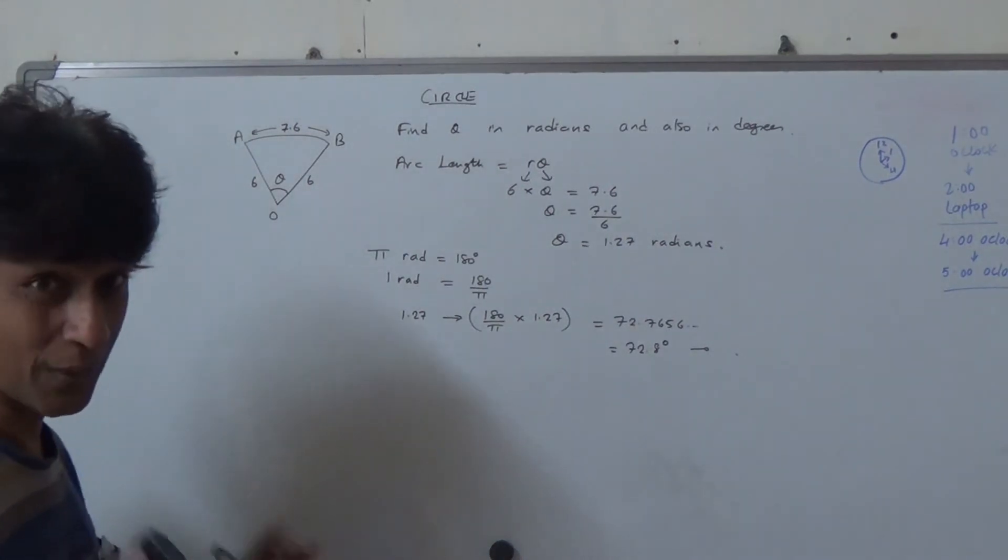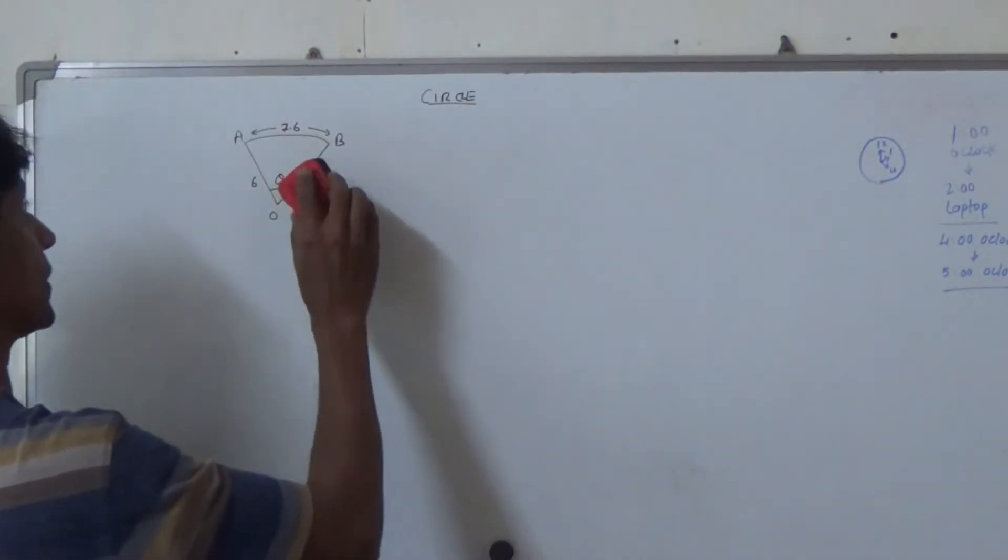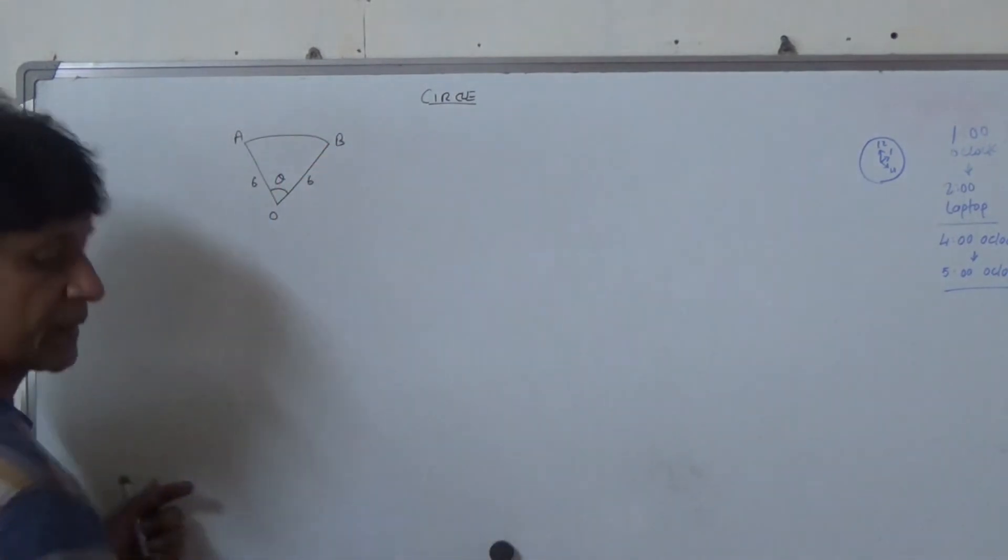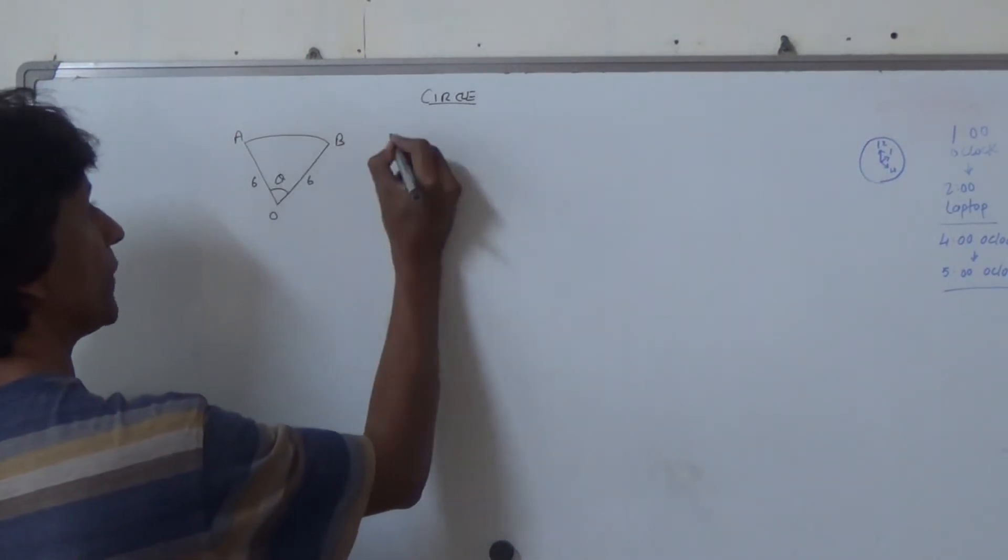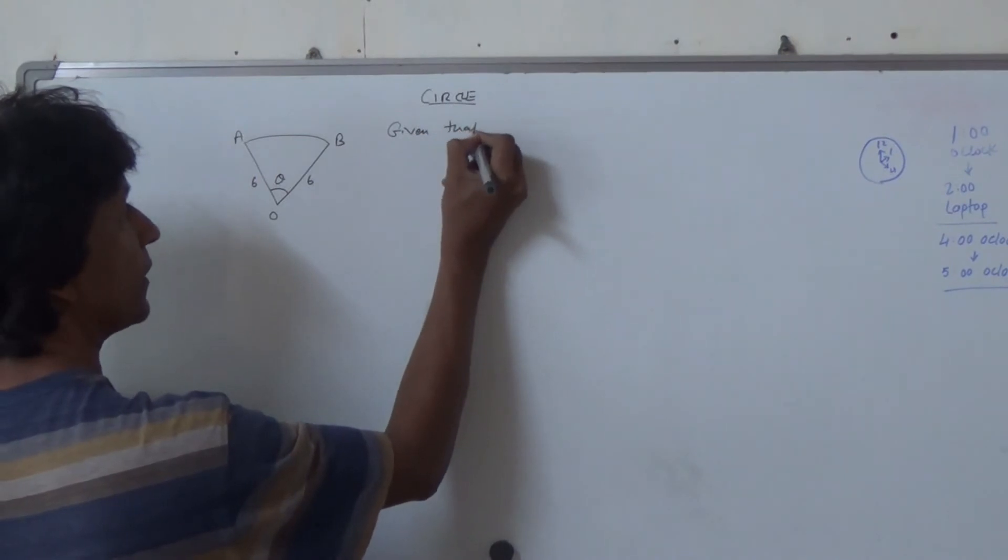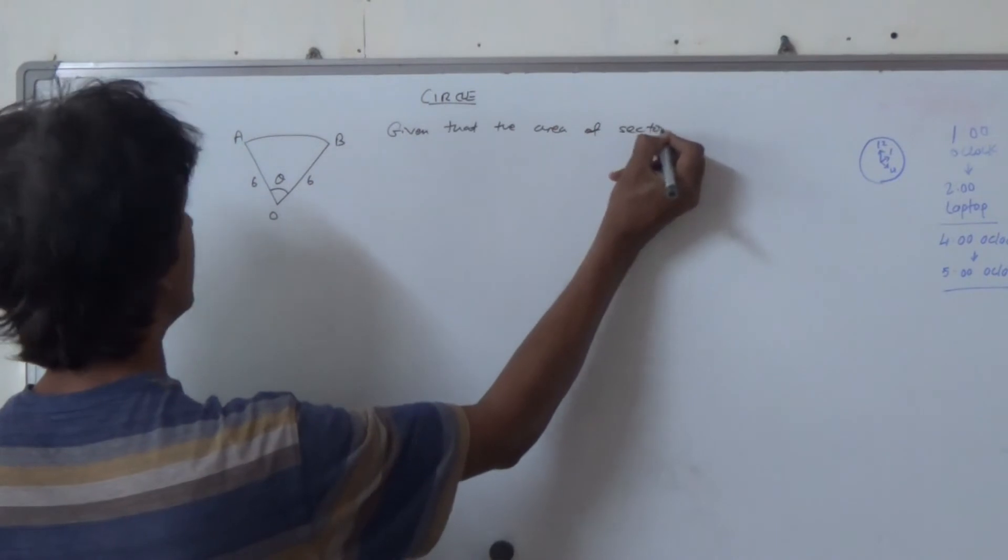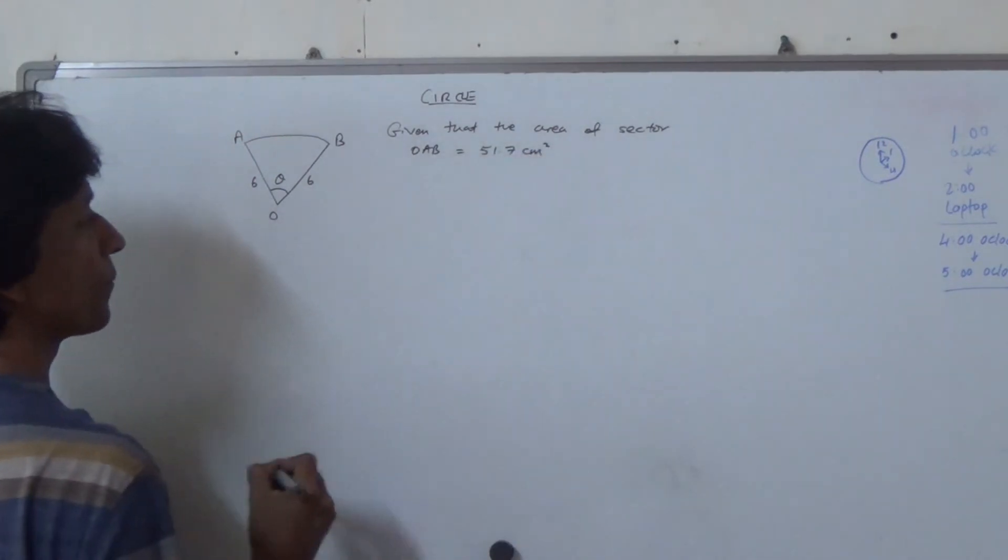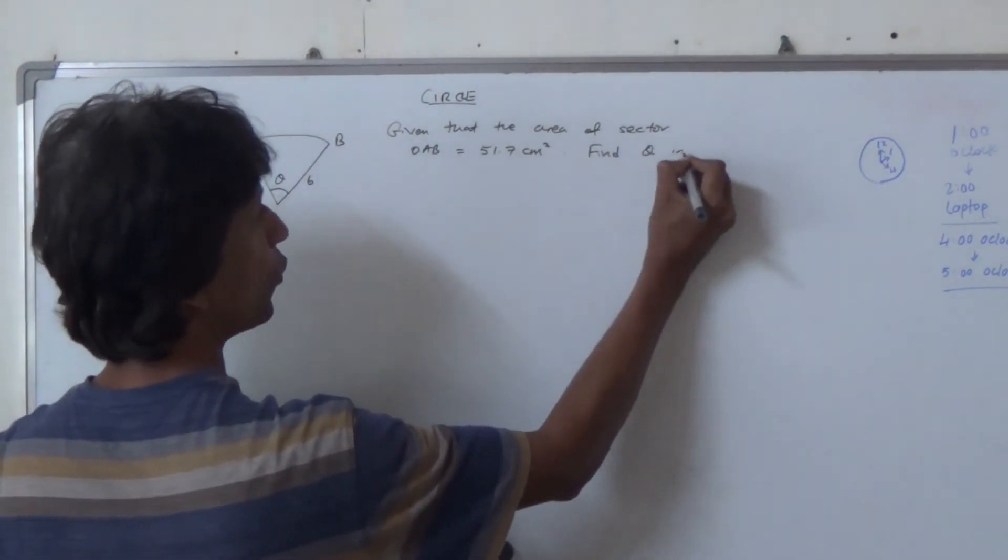Now, I'm just going to take a new example. Suppose now I give you, say for instance, this is theta, and I tell you that given that the area of sector OAB is equal to, let's say, for instance, 51.7 cm2, and I tell you to find theta, of course, in radians.